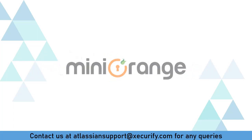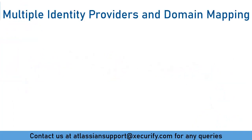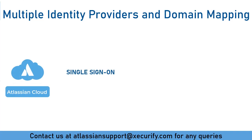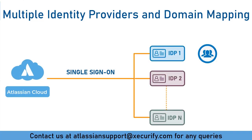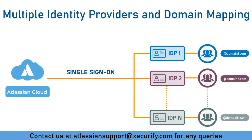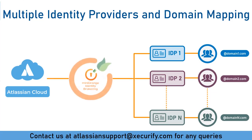Welcome to Minirange. In this video, we will demonstrate how Atlassian Cloud SSO configuration works with multiple identity providers, and how you could map users to different IDPs based on their email or username domain for login, using Minirange brokering.